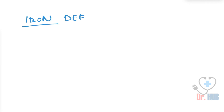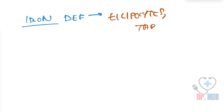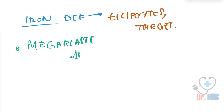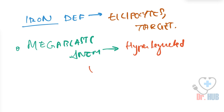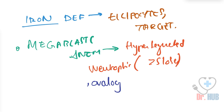Now answering our two questions: For iron deficiency anemia, the blood smear findings are elliptocytes and target cells. For megaloblastic anemia, the findings include hypersegmented neutrophils with greater than five lobes, and the presence of ovalocytes.